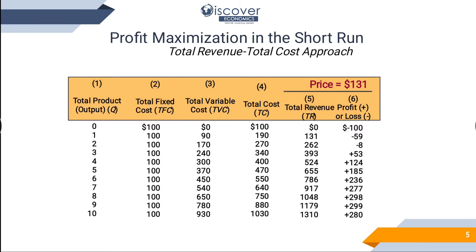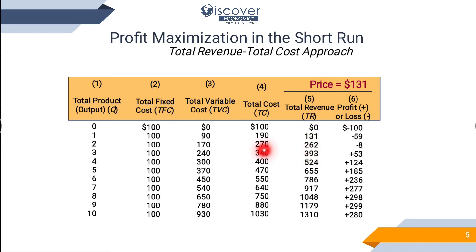Now you have to calculate your profits by subtracting total cost from total revenue. 131 minus 190 equals minus 59, meaning a loss. 262 minus 270 equals minus 8, still a loss. 393 minus 340 equals plus 53, a profit. 524 minus 524 equals 0.